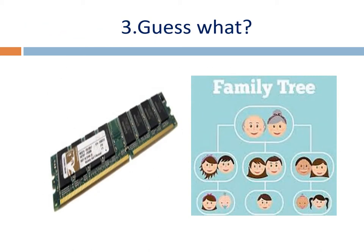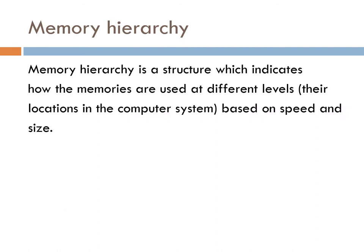Can you guess this? These are all memory chips, so this is memory. This family tree indicates there is some hierarchy to follow — similarly, we have memory hierarchy. It tells the different levels of memory, starting from CPU registers, then cache memory, main memory, and secondary memories. Memory hierarchy is a structure which indicates how memories are used at different levels and their locations in the computer system. Based on this memory hierarchy, you will have different speed, size, and cost, which varies as you move from the upper level closest to the CPU down to secondary memories.